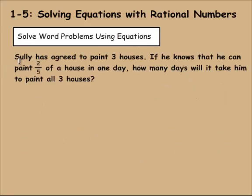Let's look at a word problem then. So Sully has agreed to paint three different houses. If he knows that he can paint 2/5 of a house in one day, how many days will it take him to paint all three houses? Some people mistakenly multiply 2/5 times 3 in this one. And the big trick for me that I do is always turn, whenever I have a fraction, I turn it into a whole number to make it easier for me.